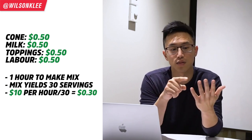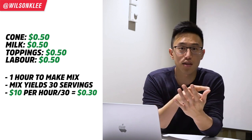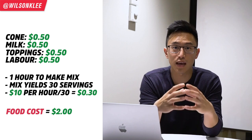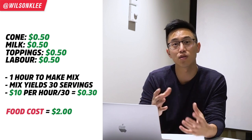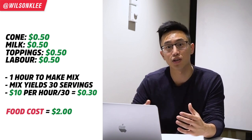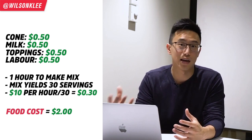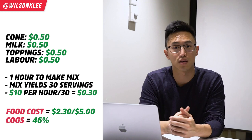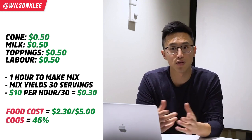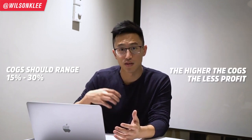So for the sake of this example — 50 cents for the cone, 50 cents for the milk, 50 cents for the toppings, and 50 cents for the person that creates the mix — that adds up to $2 for making that cup of ice cream. That becomes your cost of goods sold. Now use that number divided by how much you actually sell the product for. If we sell the ice cream for $5 to the public, then $2 divided by $5 gives us our cost of goods sold. Typically, cost of goods sold should range from 15% to 30% — 30% is the maximum we would want.